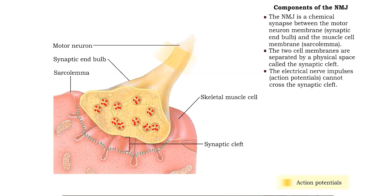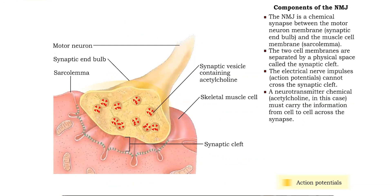The nervous impulses can only travel along membranes, so they cannot move across the gap between the neuron and the muscle. A neurotransmitter chemical that diffuses across the cleft is required to transmit the impulses. In neuromuscular junctions, the neurotransmitter chemical is acetylcholine.